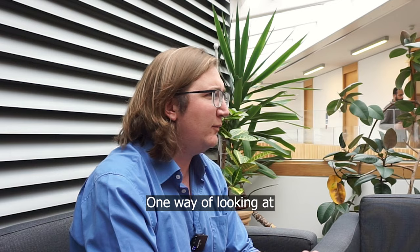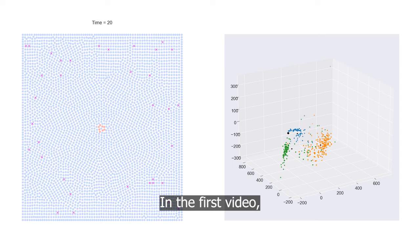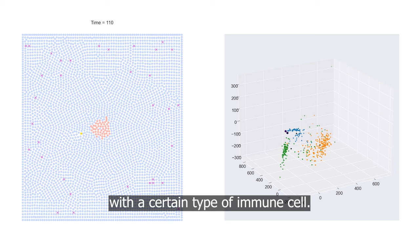One way of looking at that is to build mathematical models. In the first video you're seeing an agent-based model of a growing tumour together with its interactions with a certain type of immune cell.